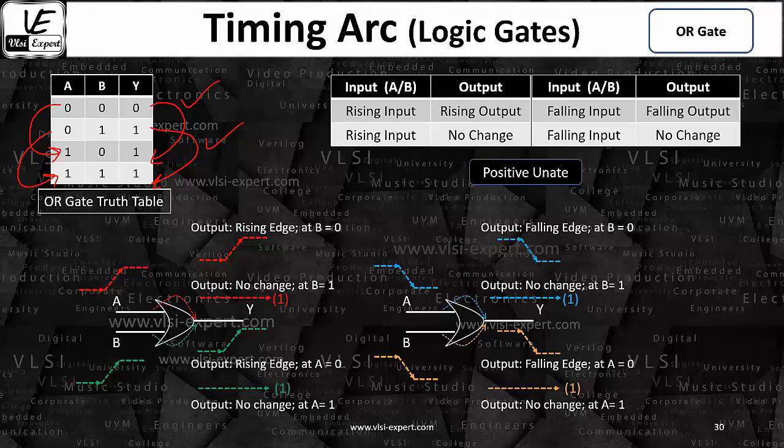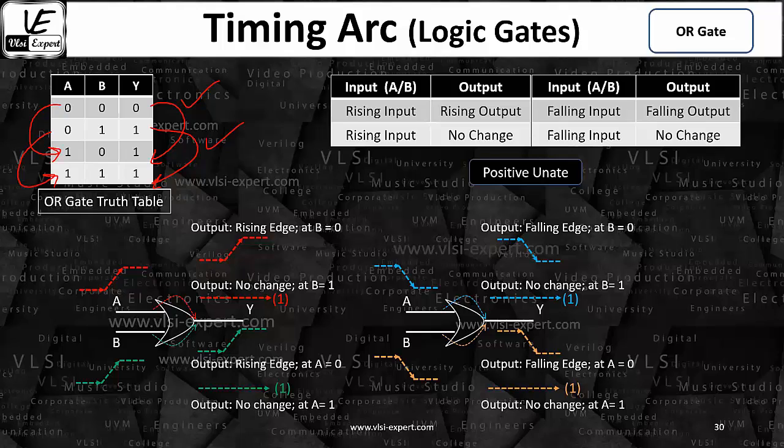Now if you see from the AND gate, the previous slide, and the OR gate, this particular slide, the input and output combination - the A to Y and B to Y - in both cases it is a positive unate.